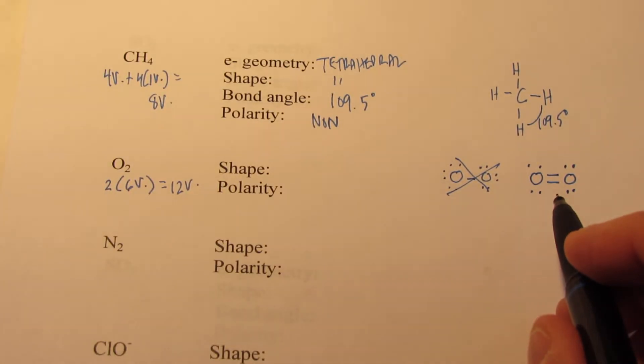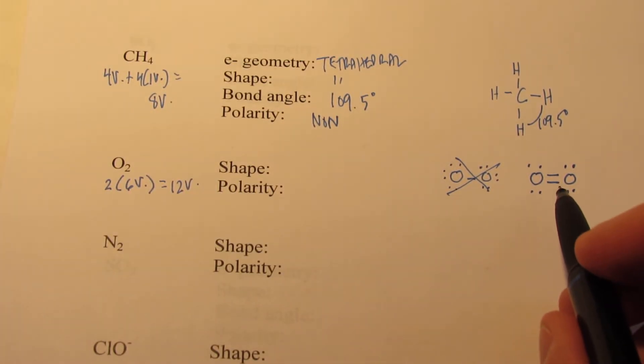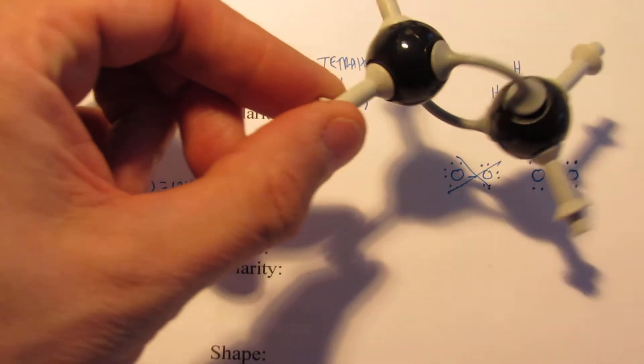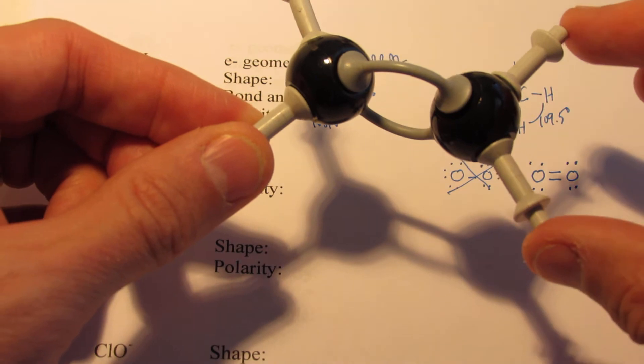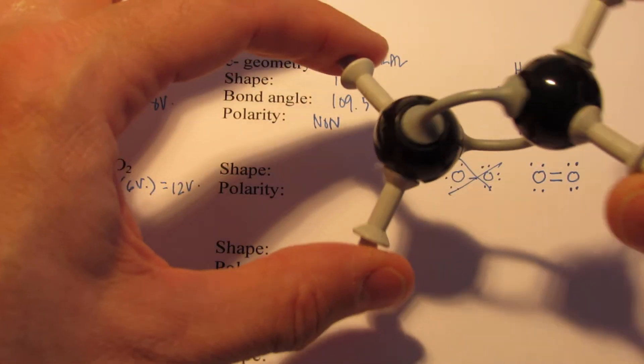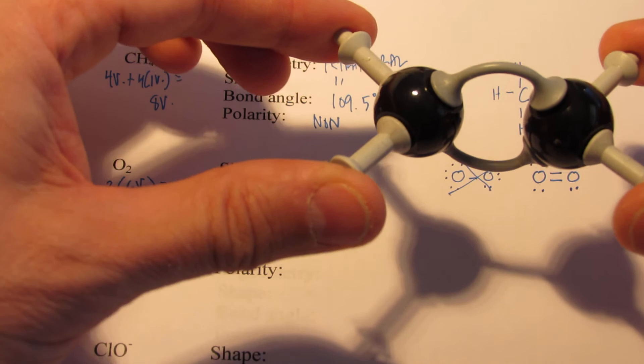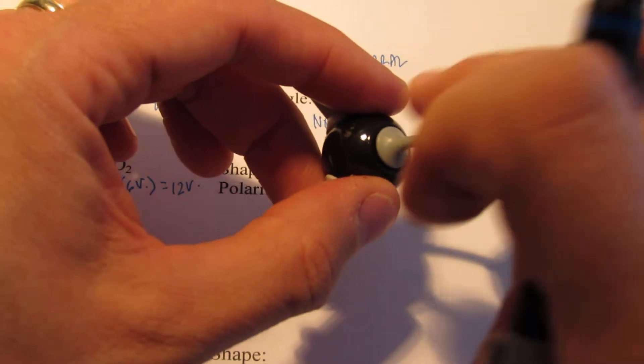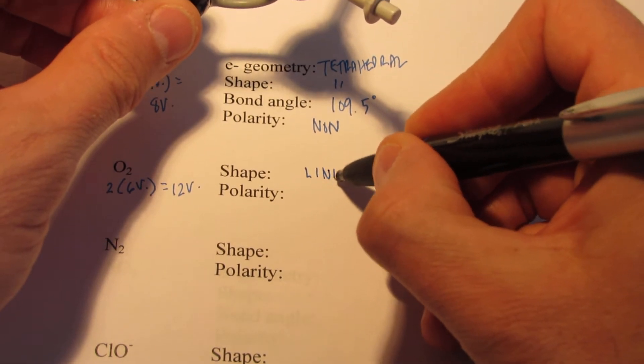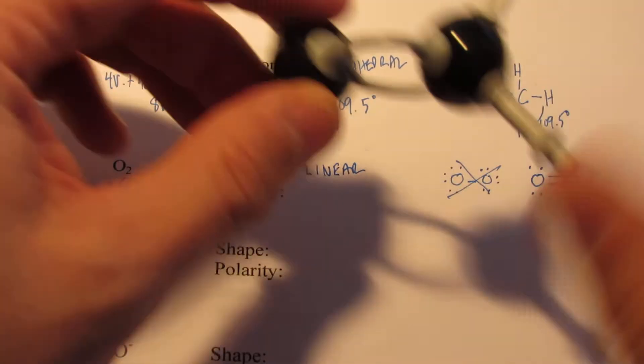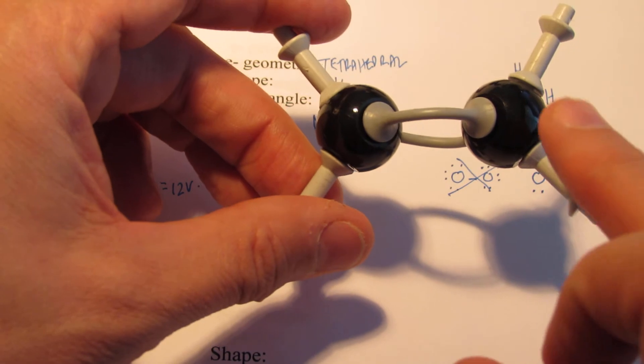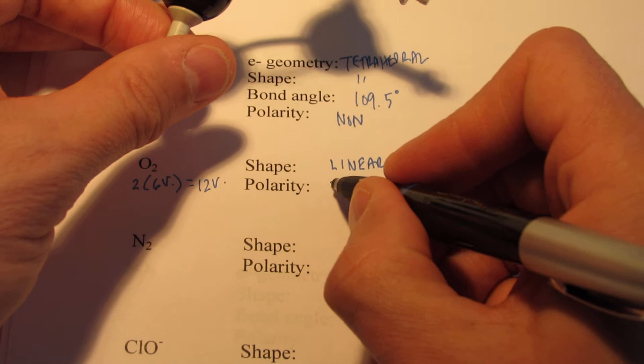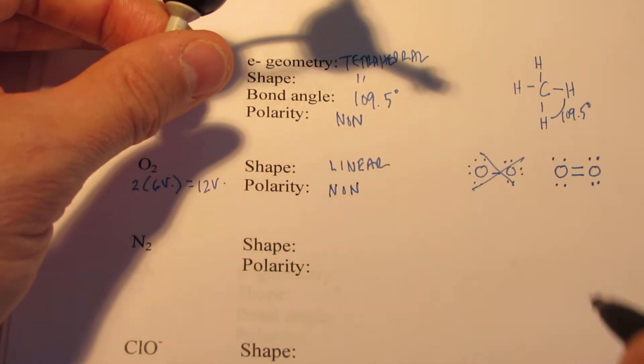Now, the shape should be pretty straightforward here. It's going to be a linear molecule. We're sharing 2 pairs, and of course, these are the non-bonding pairs on each oxygen represented here. We call that a double covalent bond, much stronger than a single bond. Whenever there are 2 atoms, that has to be linear. And the polarity should be obvious as well. These are the same atoms, both oxygens, so there's no electronegativity difference, so we would say that is non-polar.